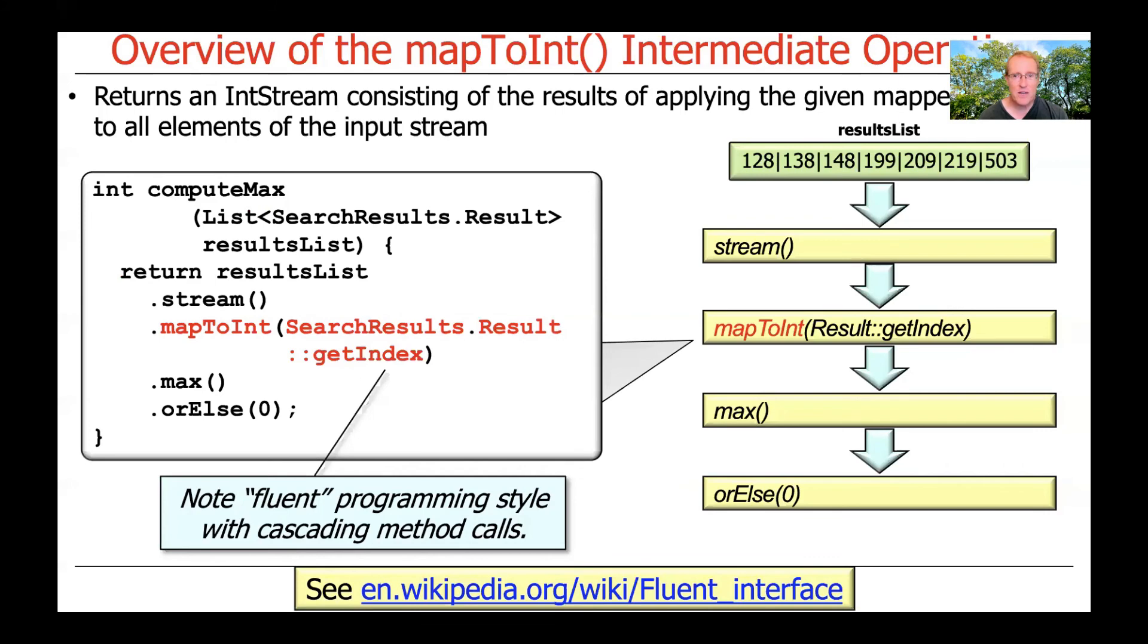This is how we would actually use it in our code. You can see here that, once again, we have this fluent cascading style of method calls that make the pipeline for the stream. And here we take the results list, convert it to a stream, and then we use mapToInt to convert the stream of result objects, which are obviously reference types, into a stream of primitive ints. We'll take a look in more detail later about how that works, and I'll walk through the code in more detail.